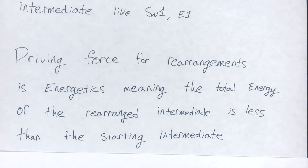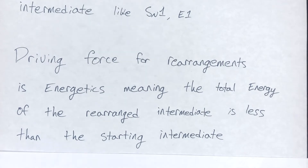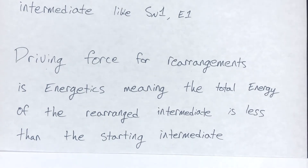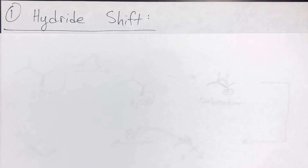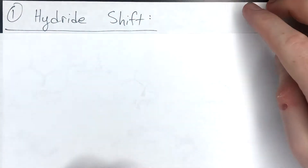This may seem paradoxical — how can we have lower energy in a different intermediate while conserving energy? When you undergo the rearrangement from the less stable intermediate to the rearranged intermediate, you lose the difference in energy as heat. That will make the most sense on an energy diagram, which I'll show in a specific example. The first example we'll look at is the hydride shift, the simplest type of rearrangement.